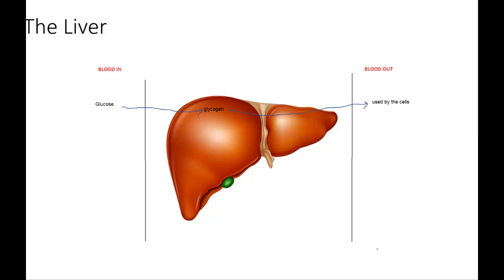And let us look at amino acids in the blood. Blood before it goes into the liver has amino acids in it, and once it gets inside the liver, some of these amino acids are used to make proteins — proteins that are in the plasma area of the blood. Any extra amino acids are broken down into glucose and urea.